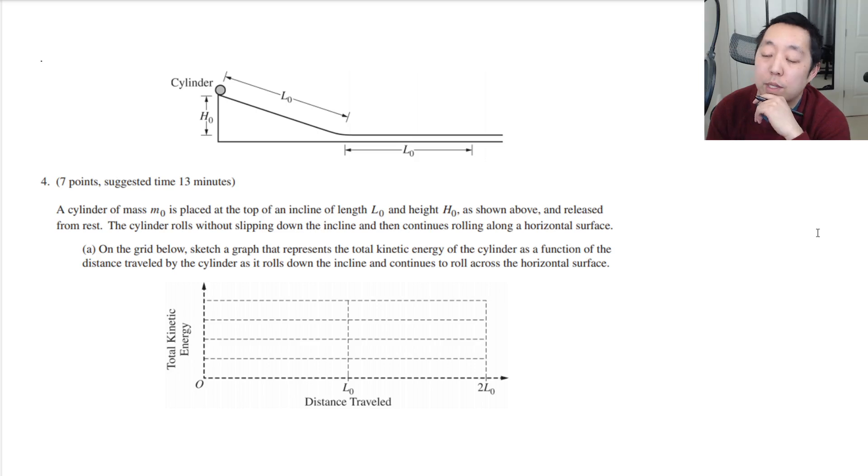So a cylinder of mass M0 is placed at the top of the incline of length L0 and a height of H0 is shown above and released from rest. The cylinder rolls without slipping down the incline and then continues rolling along a horizontal surface. On the grid below, sketch a graph that represents the total kinetic energy of the cylinder as a function of distance traveled as it rolls down the incline and continues to roll across the horizontal surface.